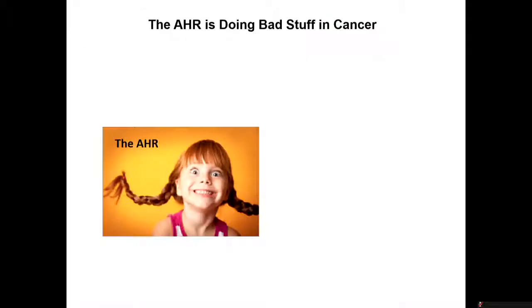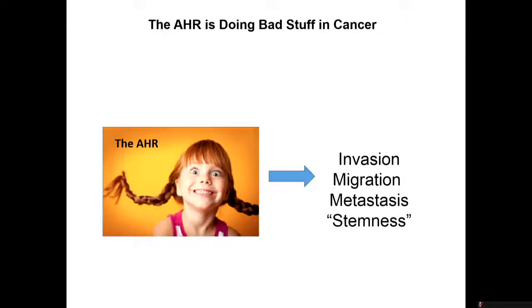So what we did was evaluate what kind of outcomes you see when you manipulate the AHR. Some of the bad outcomes include increased invasion, migration, metastasis, and stemness. We've been doing this mostly with triple negative breast cancers and oral cancers. We're doing a little bit of melanoma now and some brain cancer, and the outcomes seem to be pretty much the same.